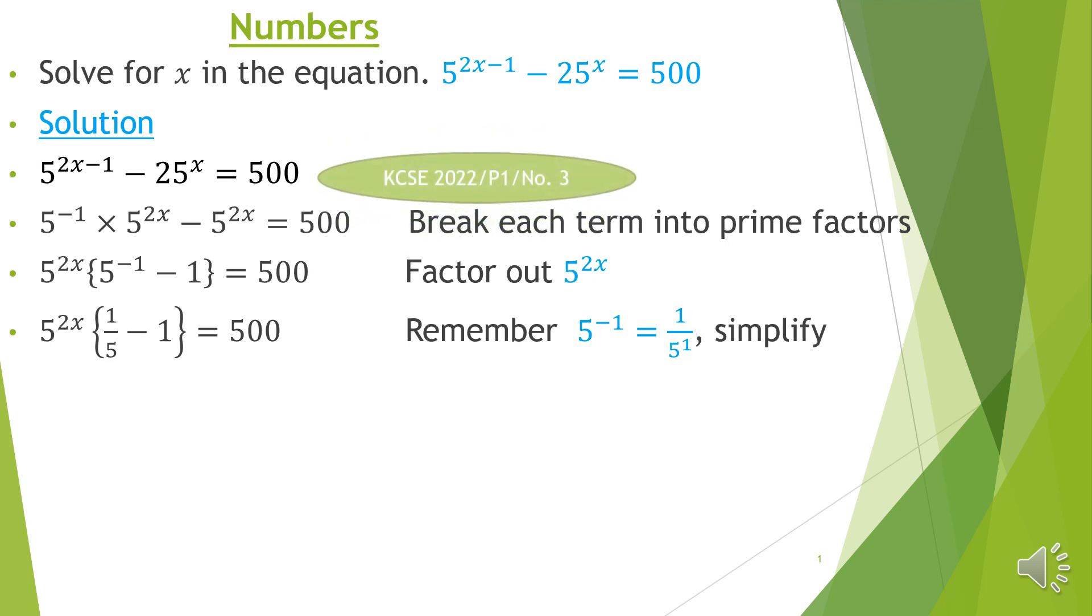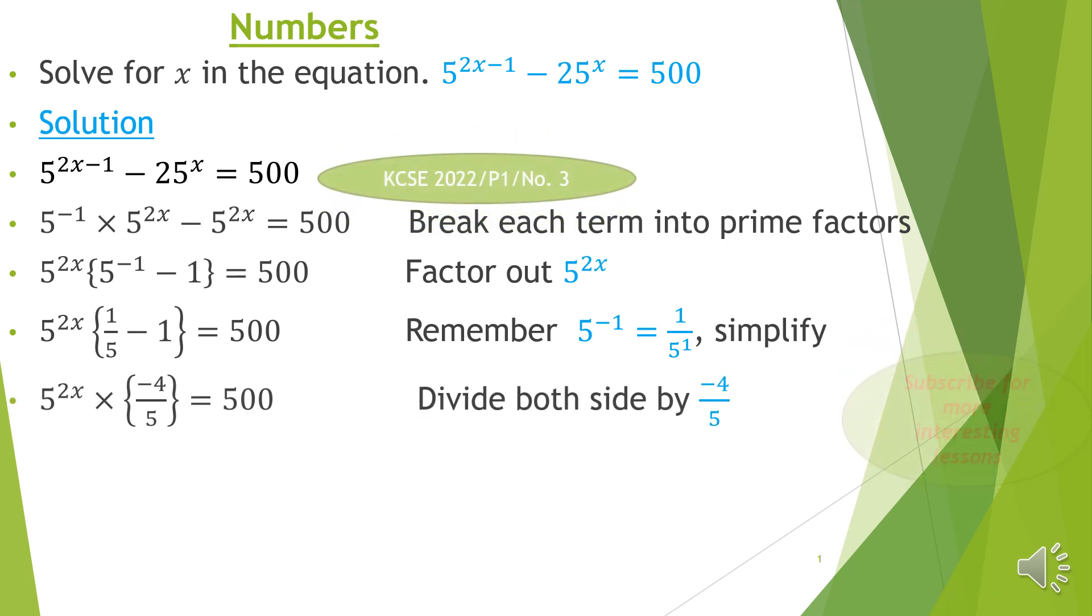Now, simplifying that reduces to 5 raised to 2x times 1 over 5 minus 1, which is negative 4 over 5 in the bracket, equals 500. So once you have done that, then we can divide both sides by negative 4 over 5.